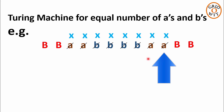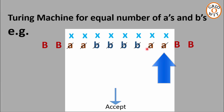Now at the end, if all the pairs of AB are deleted and all the symbols are converted to X, and there are no extra As or Bs left to be deleted, then the Turing machine will accept this string.